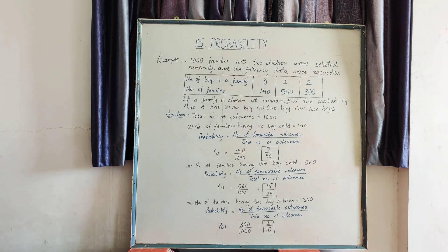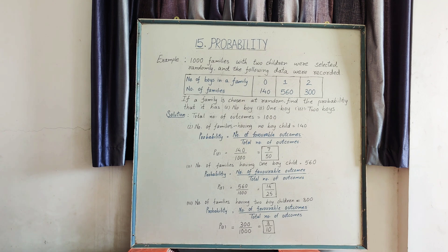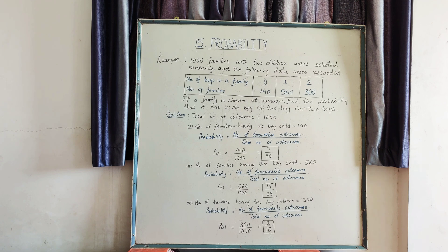So for probability it ranges between zero to one. For an uncertain event — an event which either may happen or may not happen — the probability always lies between zero to one. For impossible events, the probability is always zero. For events which are always certain to happen, the probability is always one. So the range of probability is from zero to one.